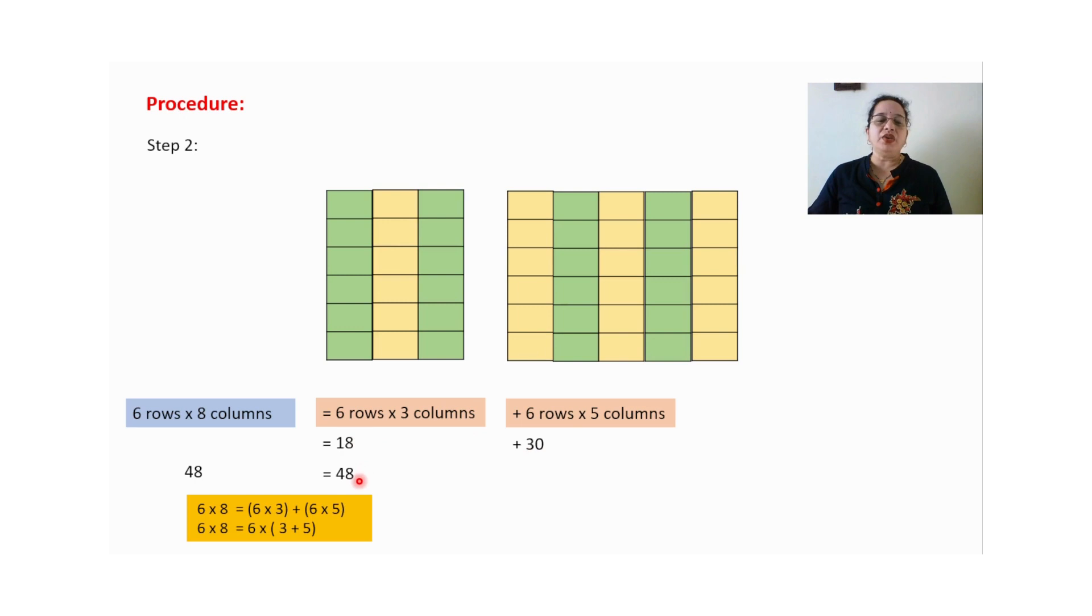Thirty plus eighteen will give you forty-eight. And initially we have started with six rows. How can we write down six into eight is equal to six into three? This six into three I have taken with this pink color box. Six into five again with this pink color box. Now your six is common. Take six common. What is left inside the bracket? Three plus five. This is distributive property.